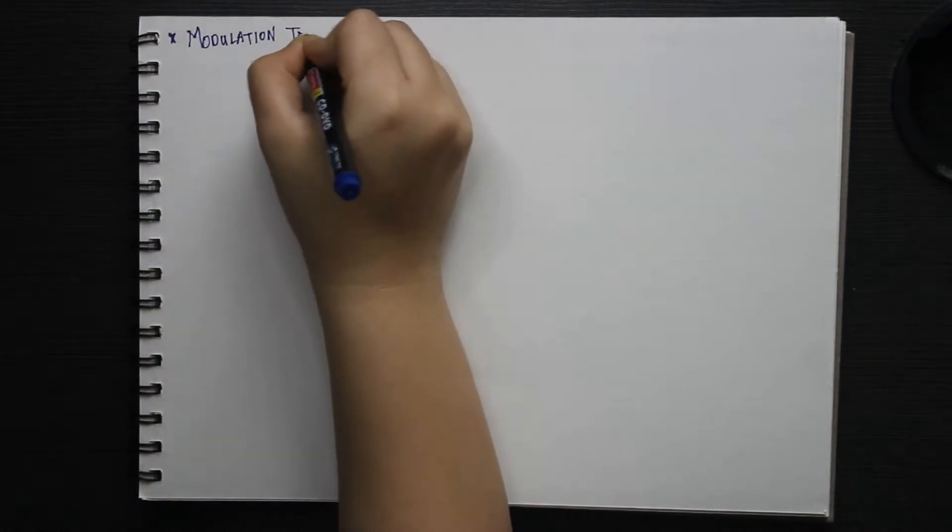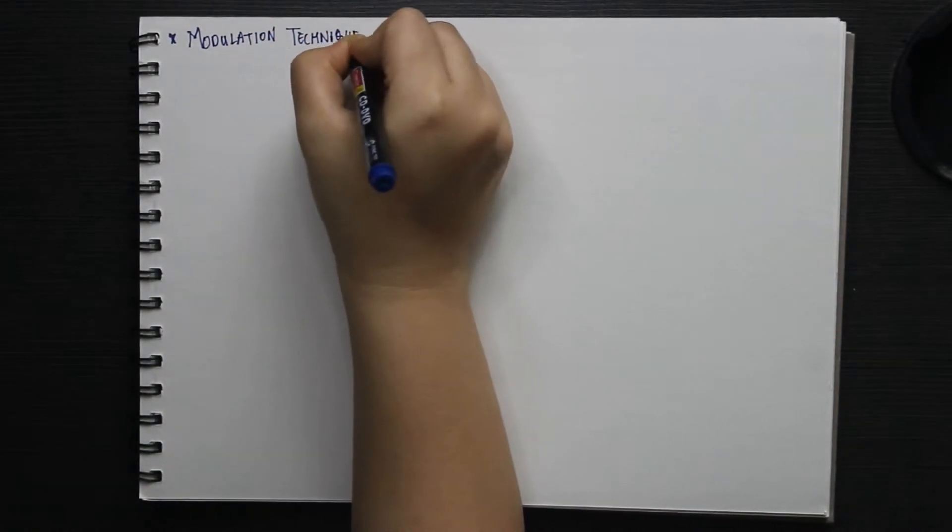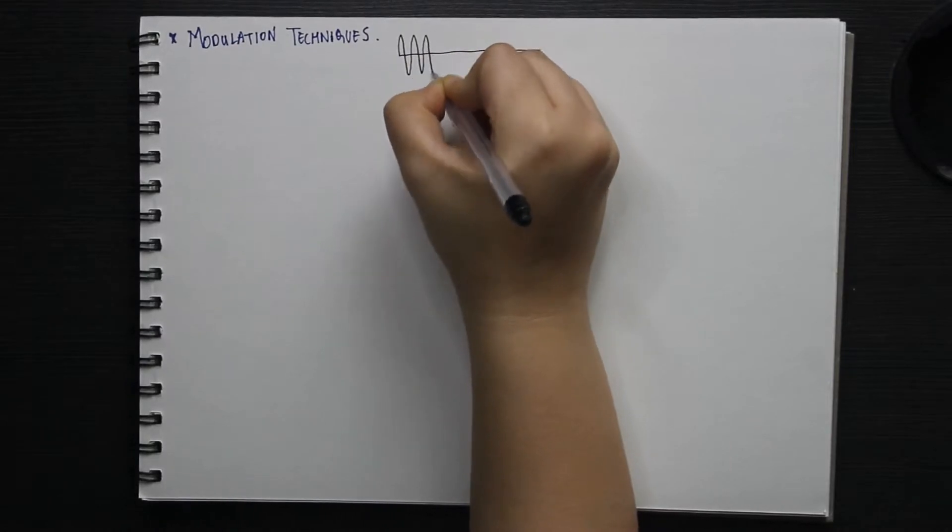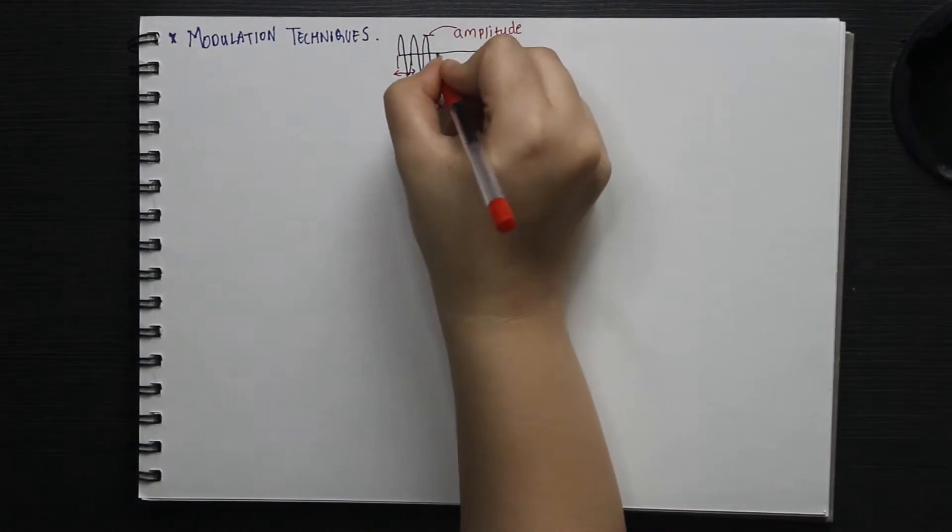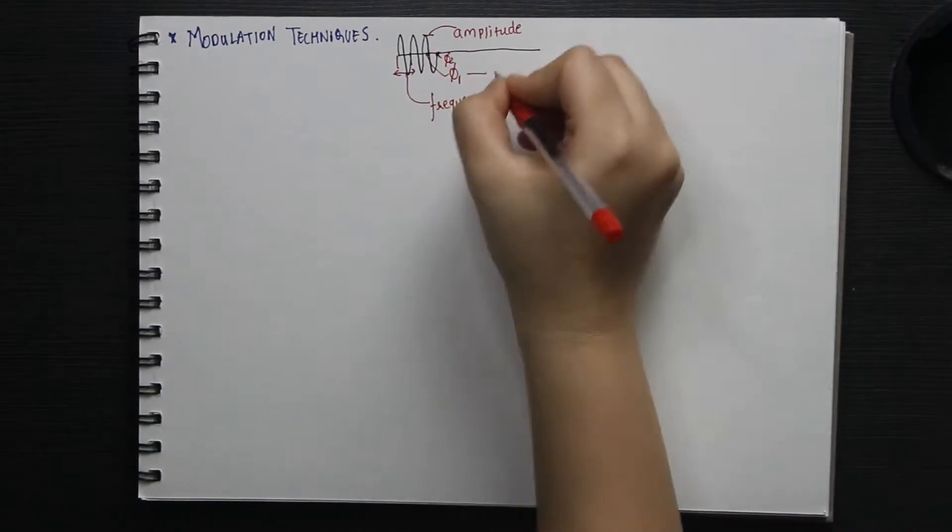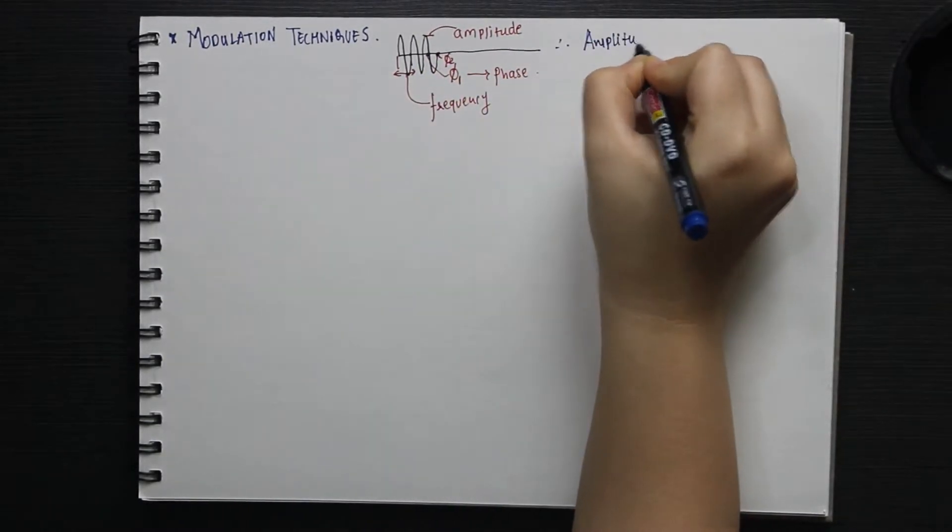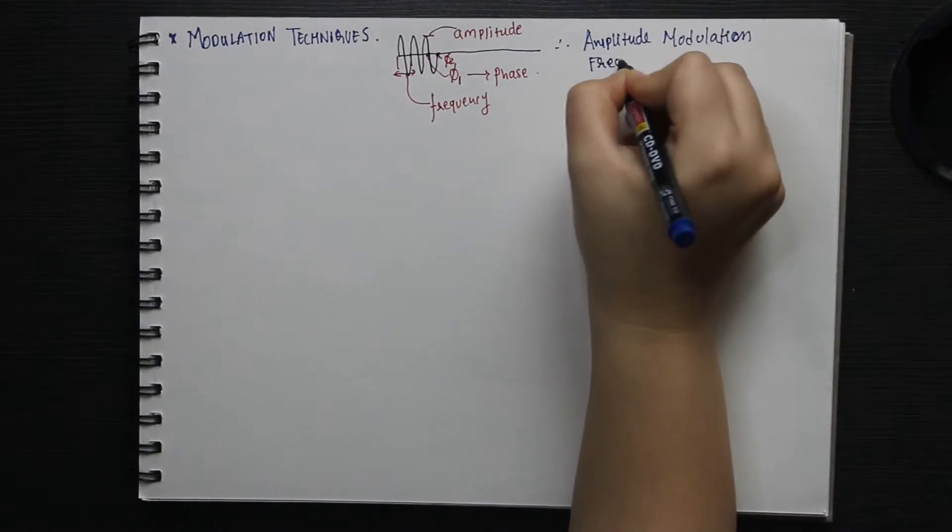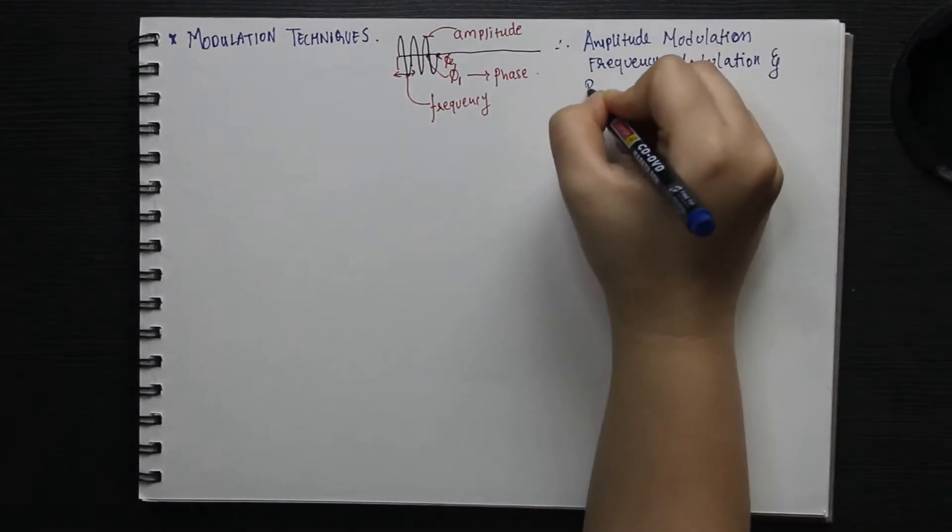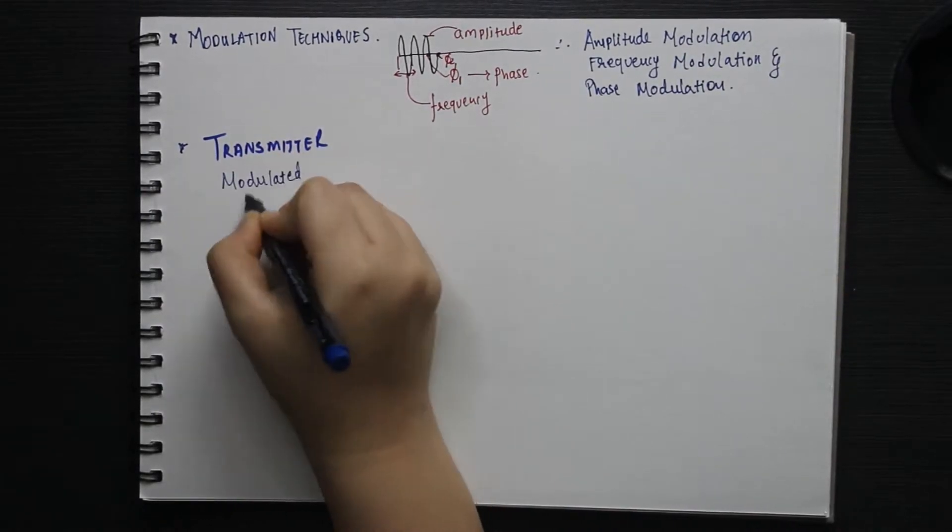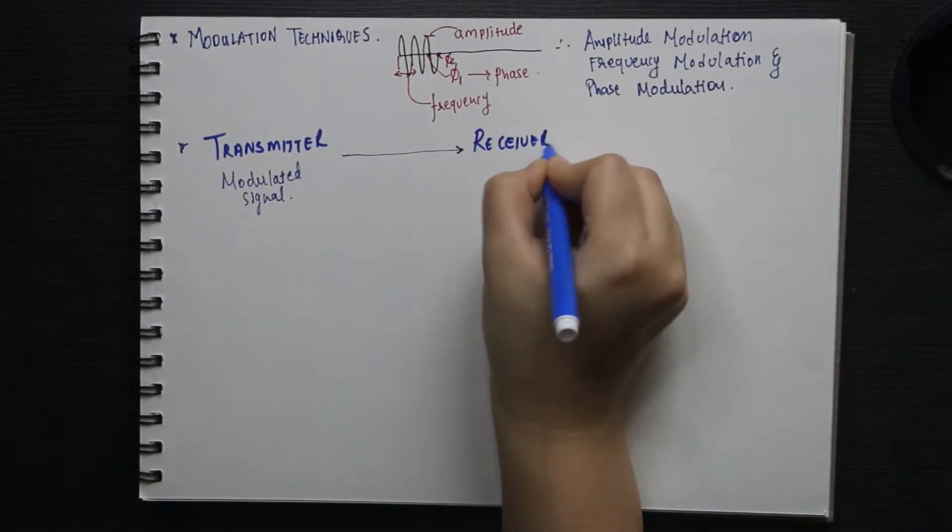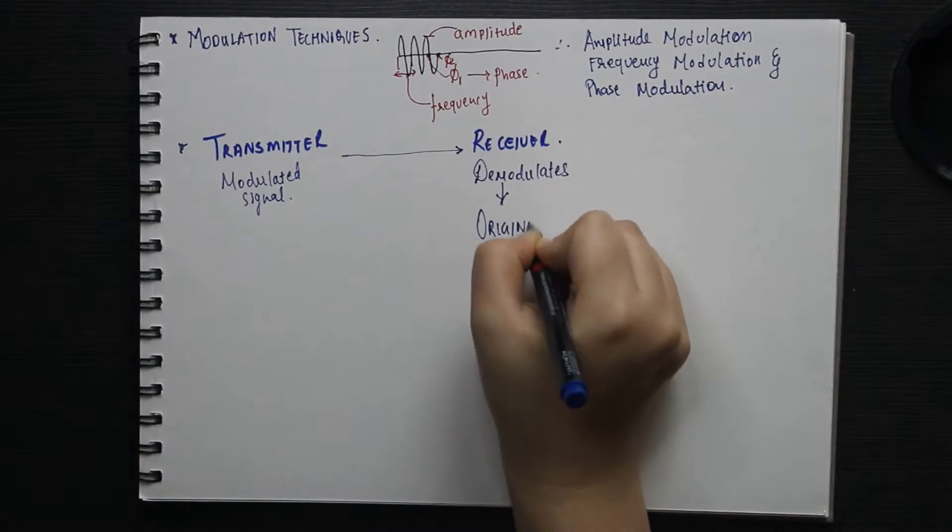We have covered what is modulation and why modulation is needed. Now, let's shift our focus to the various modulation techniques. You can change either the amplitude or the frequency or the phase of the carrier signal. Thus, you get amplitude modulation, frequency modulation and phase modulation respectively. The resulting modulated signal is then transmitted to the receiver where it is demodulated to reconstruct the original signal.